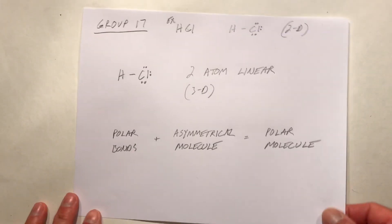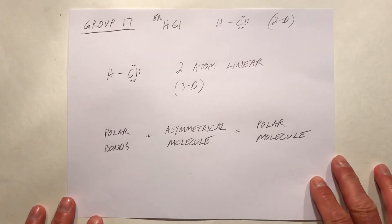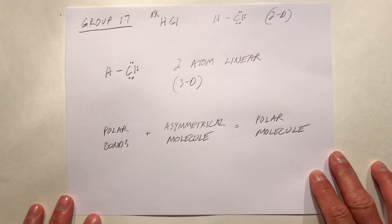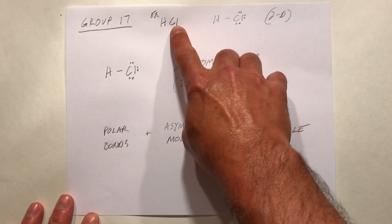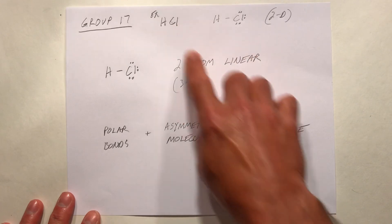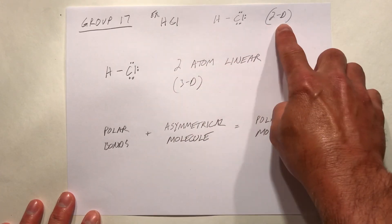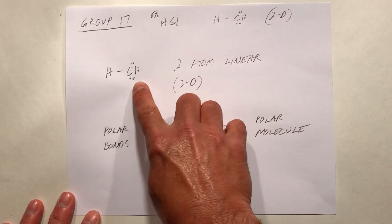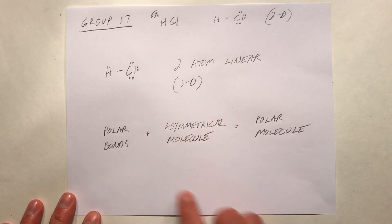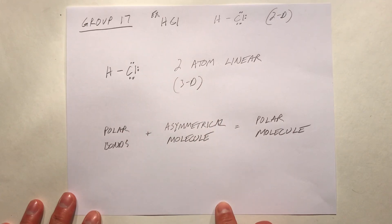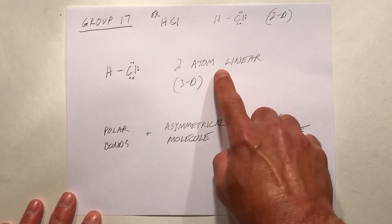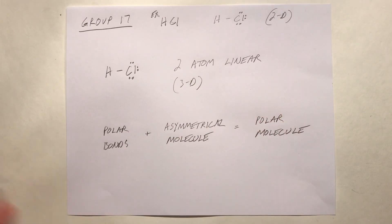Finally, group 17 elements like chlorine form a single bond, as in HCl. In two dimensions and in three dimensions it would be drawn pretty much the same way — this would be a two-atom linear molecule.